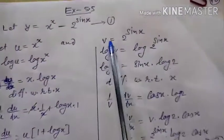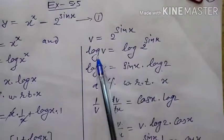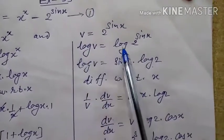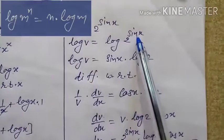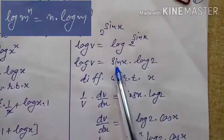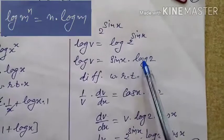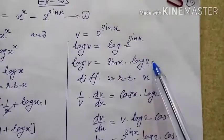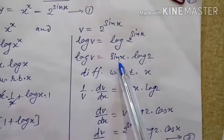Now the second term: v = 2^(sin x). Taking log of both sides, log v = log(2^(sin x)). By the logarithm power rule, this power sin x comes down, so it will be sin x · log 2. Note that log 2 is a constant, like 5 or 2 or 3, so we only need to differentiate sin x.